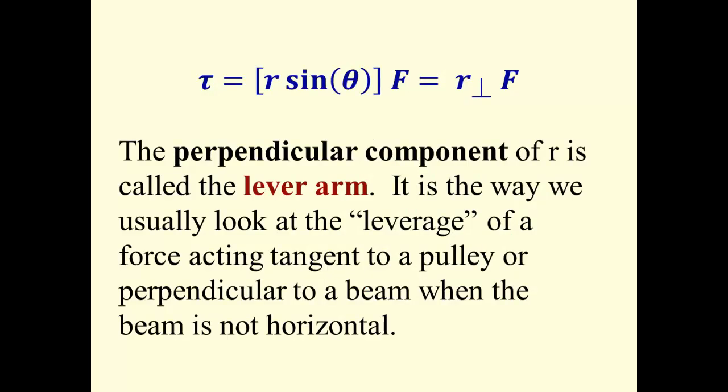The other interpretation, R perp. R perp is called the lever arm. It's the leverage of a force acting on something. Here, this is how we interpret a force acting tangent to a pulley. R perp is just the radius of the pulley. Because the force is perpendicular to the radius, that makes the radius R perp. It's also useful if the force is perpendicular to the beam, but the beam itself is not horizontal. We can then interpret a certain dimension as being the lever arm for that force.